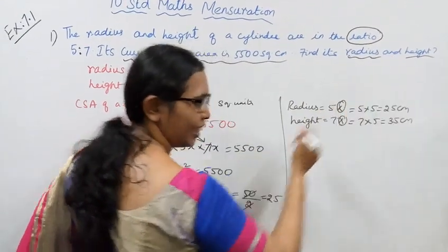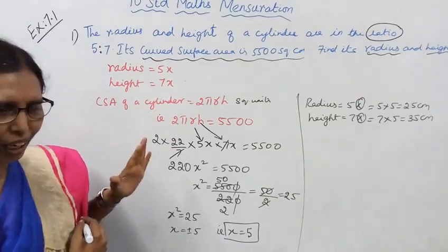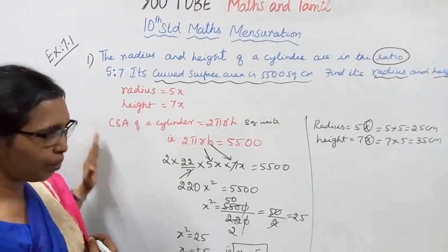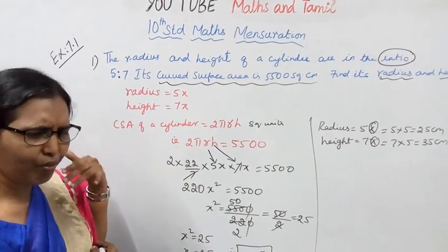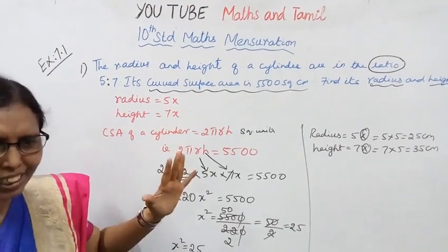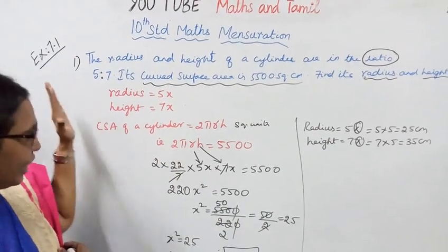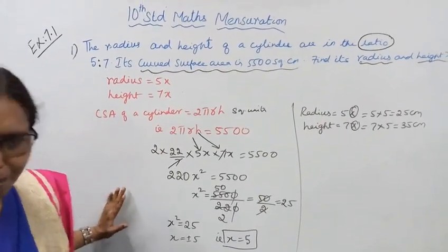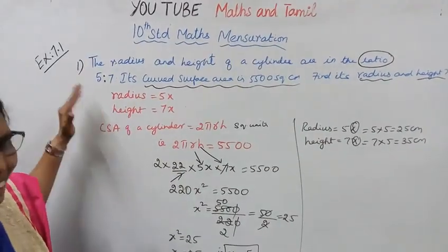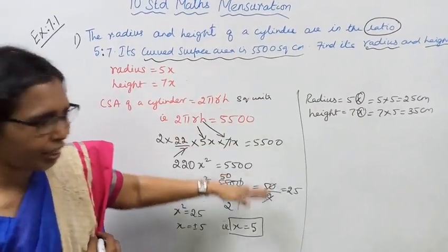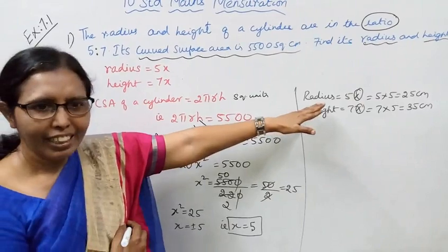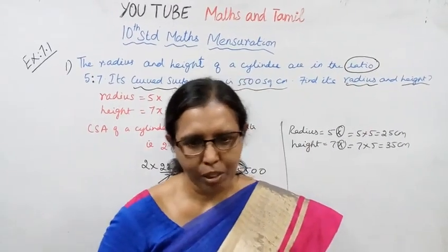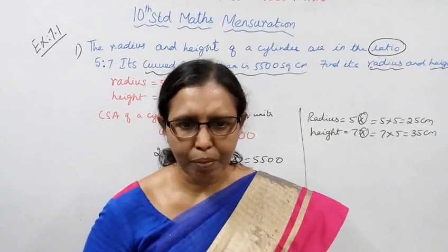So we found the radius and height. This mensuration sum is very easy if you know the formulas — they are very important. If you look at the ratio and the CSA value, you can find x and then the dimensions. This channel helps you to get 100 marks. If you want to subscribe, click the bell button.